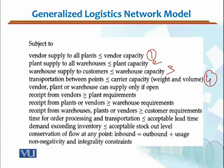The fifth constraint is that a vendor, plant, or warehouse can supply only if it is open — receipts from the vendor should be greater than or equal to the plant requirement. If your receipts from the vendor meet your plant requirements, that is a feasible condition. Similarly, receipts from plant or vendors should also be greater than or equal to your warehouse requirements.